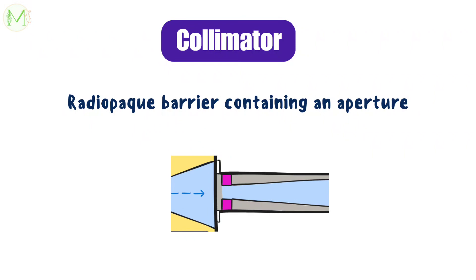Collimators decrease the scattered radiation and reduce the size of the X-ray beam. Therefore, the volume of the irradiated tissue in the patient reduces. It also reduces the patient exposure due to its small X-ray field, and it provides better contrast and increases film quality.